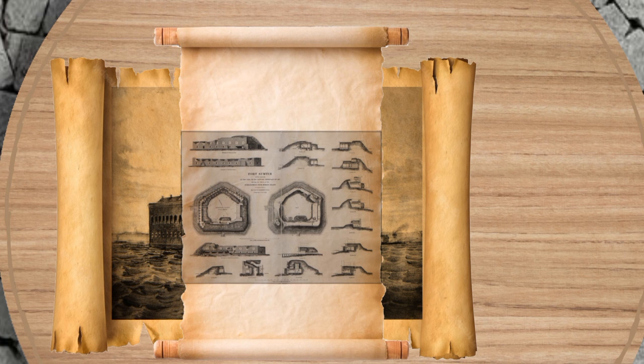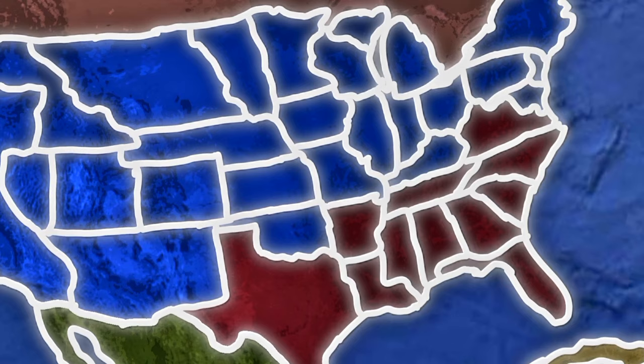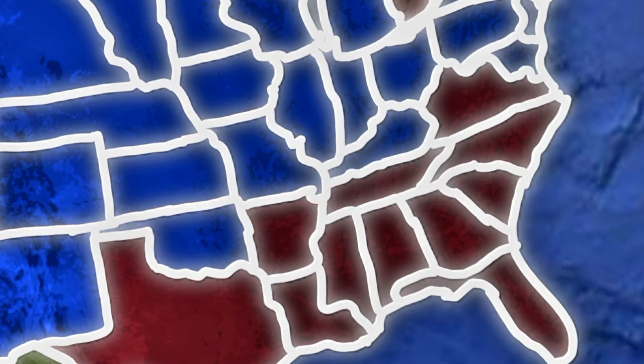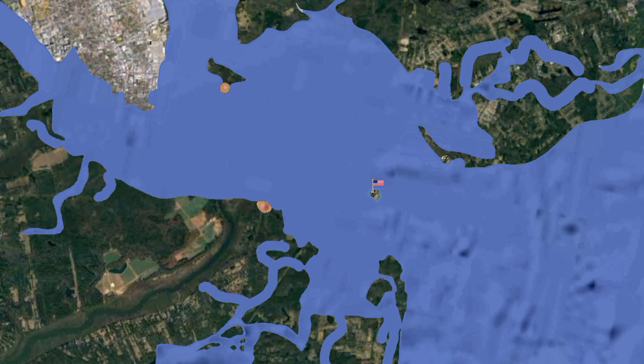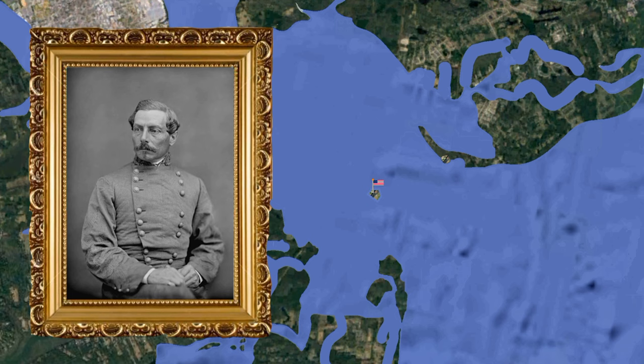The fort consisted of three levels of enclosed gun positions or casemates; the second level was unoccupied. Most guns were on the first level of casemates, on the upper parapet or barbet positions, and on the center parade field. Unfortunately for the defenders, the fort's original mission of harbor defense meant its guns were primarily aimed at the Atlantic, with little capability of protecting against artillery fire from surrounding land or infantry conducting an amphibious assault.